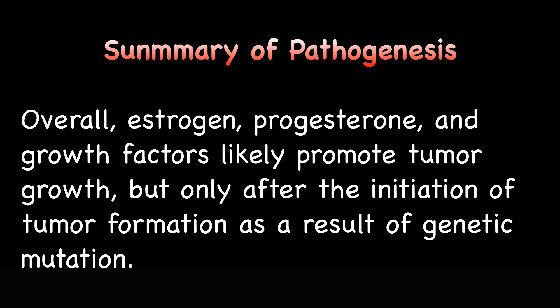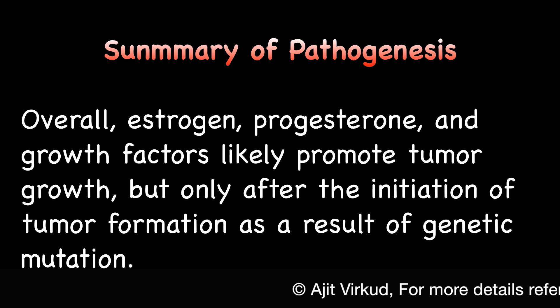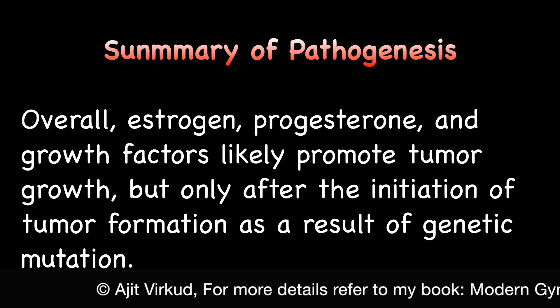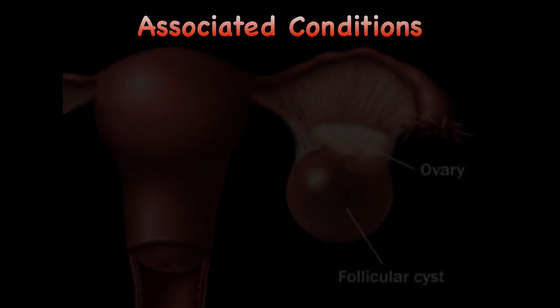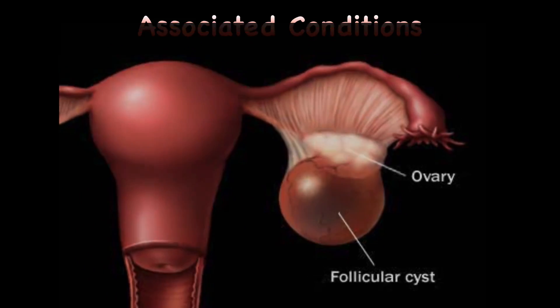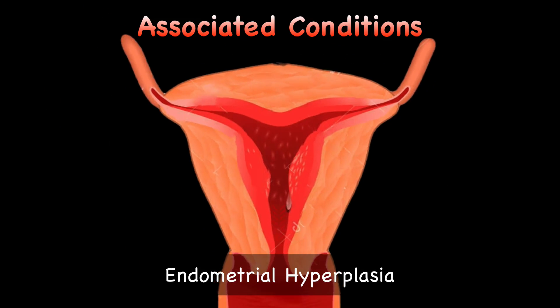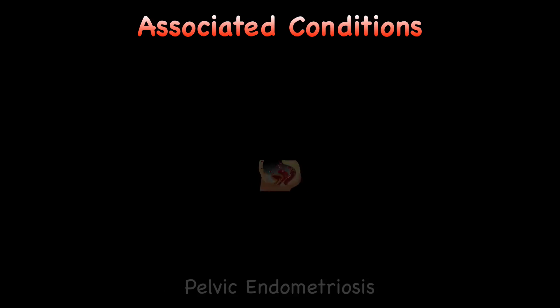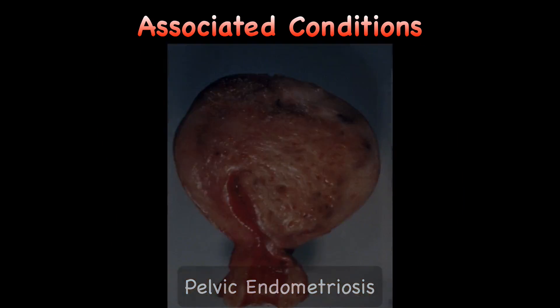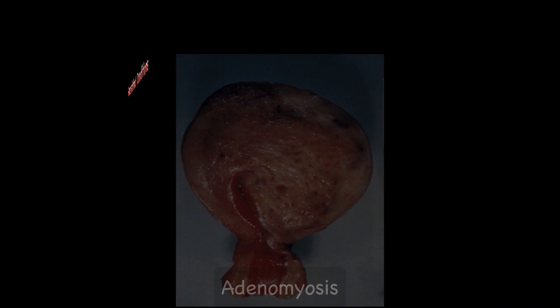Overall, estrogen, progesterone, and growth factors likely promote tumor growth, but only after the initiation of tumor formation as a result of genetic mutation. There are a number of conditions associated with increased estrogen production that encourage fibroid formation, including follicular cysts of the ovary, endometrial hyperplasia, endometrial carcinoma, endometriosis, and adenomyosis.